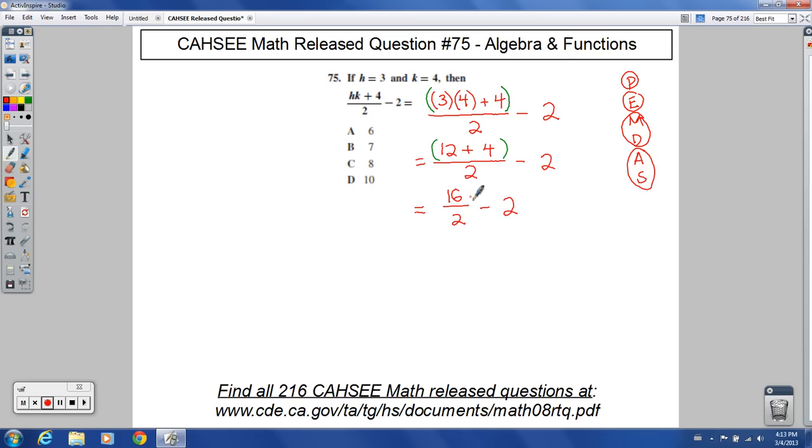Before I would subtract, I want to divide, so division comes before subtraction there. You have 8 minus 2, and that gives you your final answer of 6. So for number 75, our final answer should be choice A.